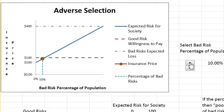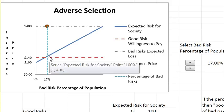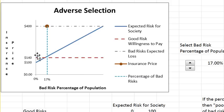As you increase the bad risk population, at 14% you hit the critical boundary. Beyond 14%, good risks will no longer buy insurance because the price exceeds their expected loss plus risk premium. So they drop out of the market, and insurance jumps in price to the expected loss of the bad risk. Only bad risks buy insurance, and the market is very small — only 17% of the population is buying insurance, everybody else is out. Once you pass this threshold you have the problem of adverse selection.